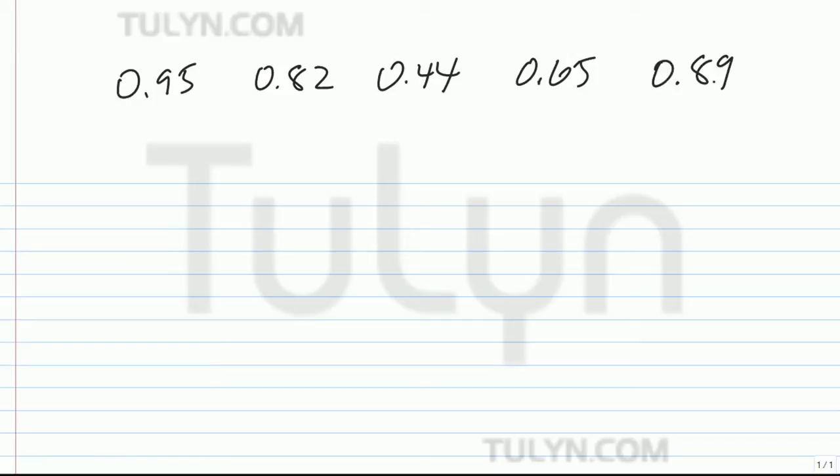So you've got 0.95, 0.82, 0.44, 0.65, and 0.89. What we've got to do is find the average and round it to the nearest hundredth.